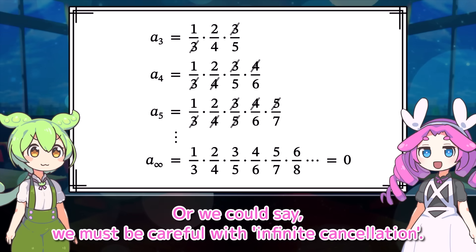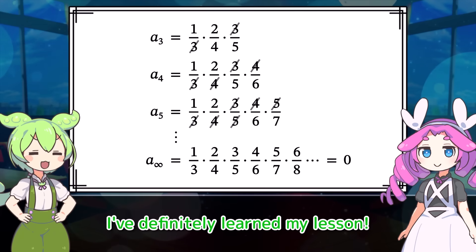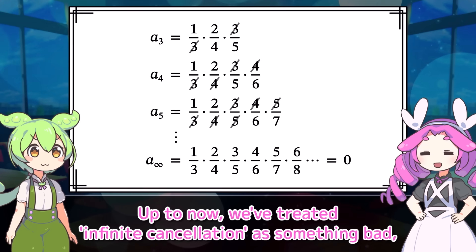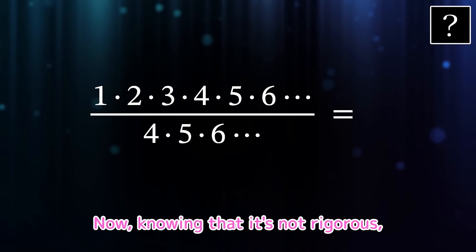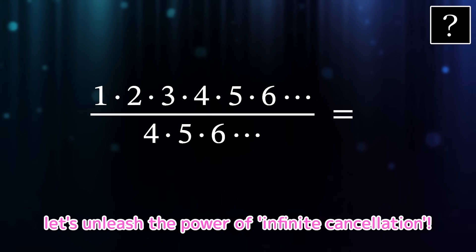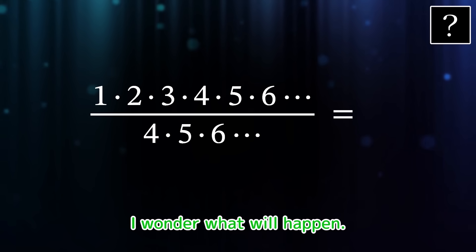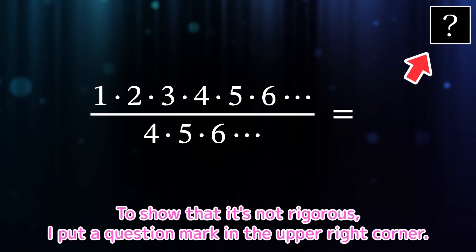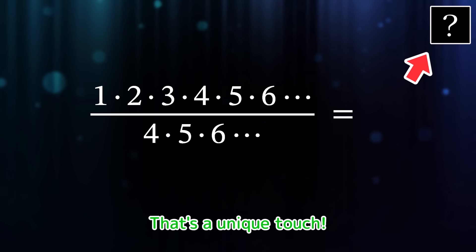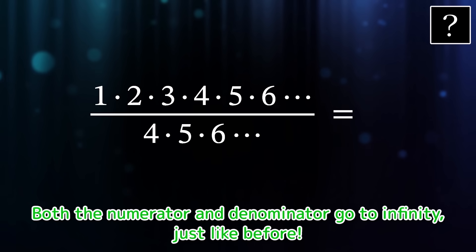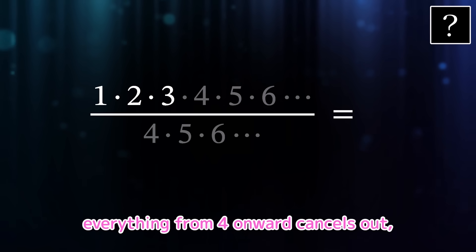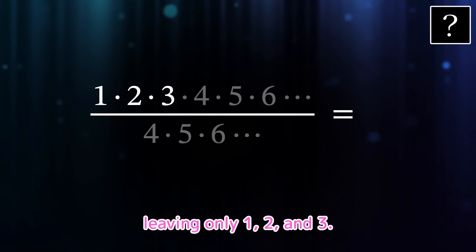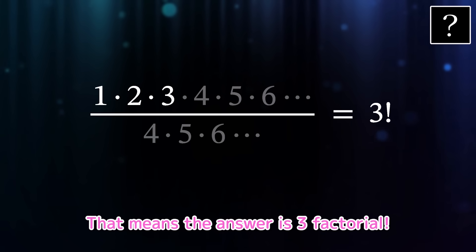I've definitely learned my lesson. Up to now we've treated infinite cancellation as something bad, but actually that idea is very important in mathematics. Knowing that it's not rigorous, let's unleash the power of infinite cancellation. To show that it's not rigorous, I'll put a question mark in the upper right corner. Both the numerator and denominator go to infinity. If we assume infinite cancellation is possible, everything from 4 onward cancels out, leaving only 1, 2, and 3. That means the answer is 3 factorial.